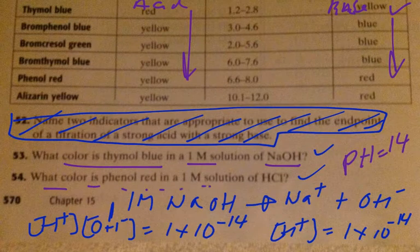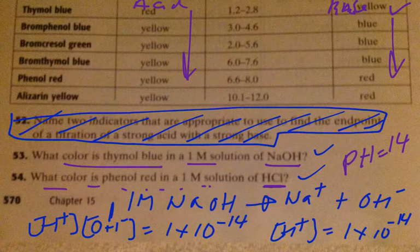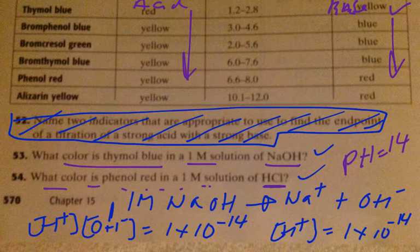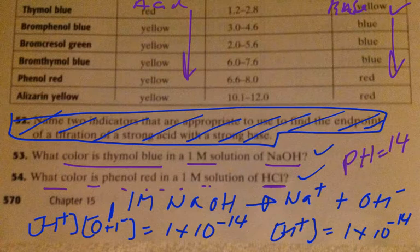What color would phenol red be if you have one big M of HCl? For this guy right here, for one big M of HCl, you apply the same principle. So you would have one big M times OH- equals 1×10^-14.